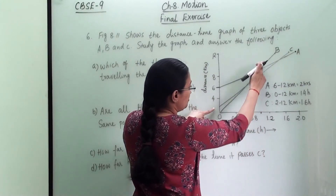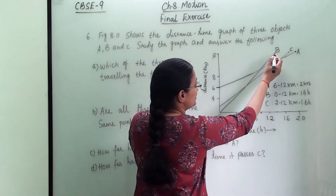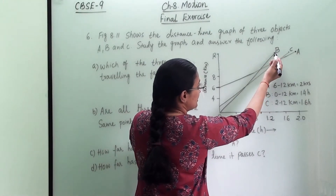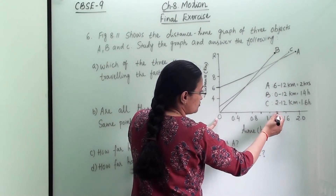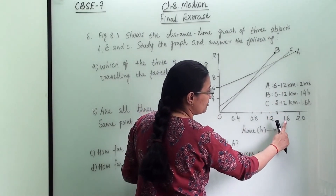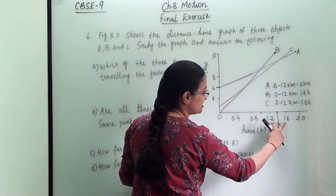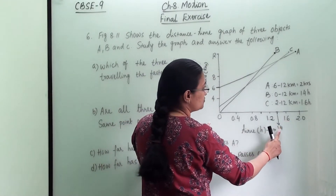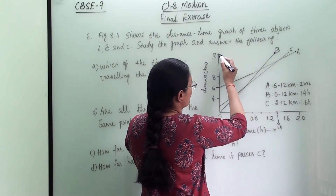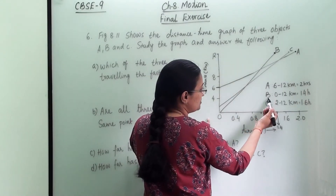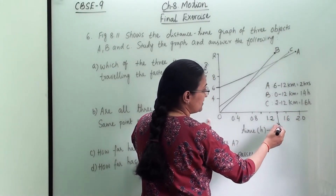Now for object B — its journey starts from 0. Extending the line to the x-axis, it falls between 1.2 and 1.6 hours, which is 1.4 hours. Extending to the y-axis gives approximately 12 km. So object B's journey is from 0 to 12 km, completed in 1.4 hours.